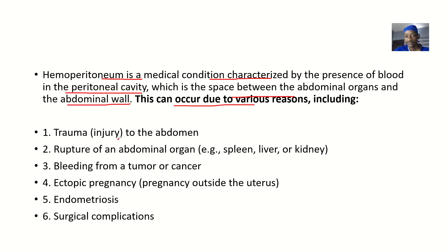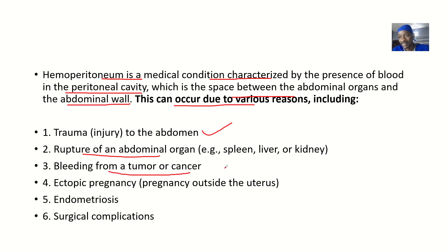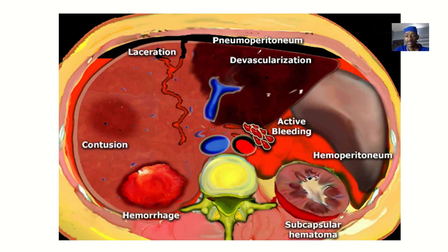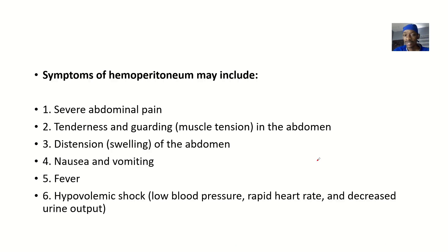These reasons could include trauma or injury to the abdomen, or rupture of an abdominal organ — it could be the spleen, liver, or kidney. It could also be bleeding from a tumor or cancer. When you see blood in the peritoneal cavity, there are many things to suspect: it could be ectopic pregnancy — any pregnancy outside the uterus — endometriosis, or surgical complications, which is most commonly seen.